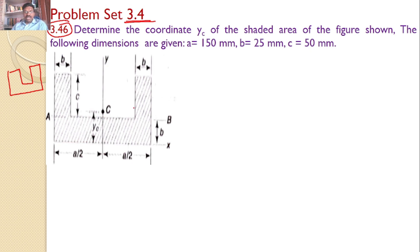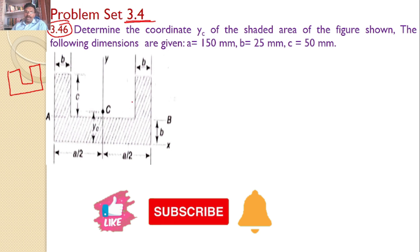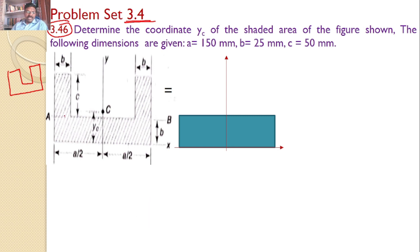I will divide this into three individual areas whose centroid is known to me. With reference to the same x and y-axis, I will divide this like so. This is area 1, this is area 2, and this is area 3. The area 1 I have redrawn.